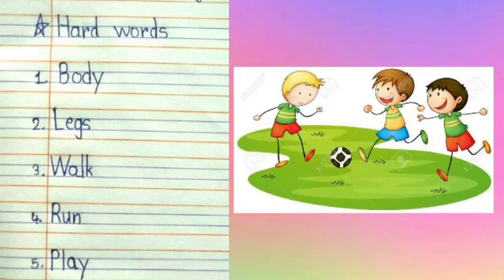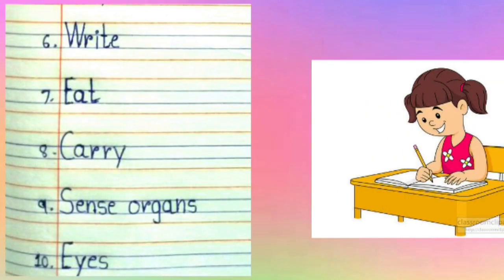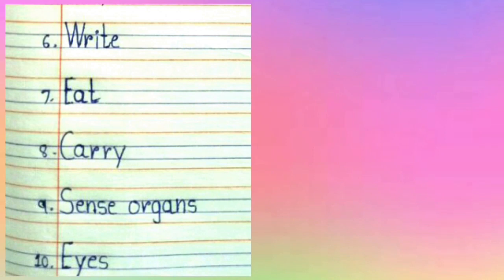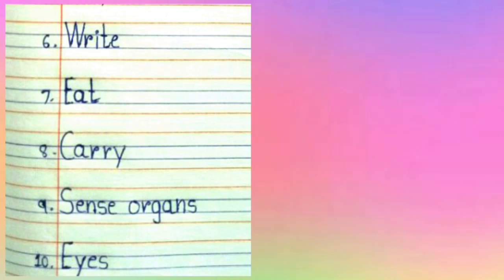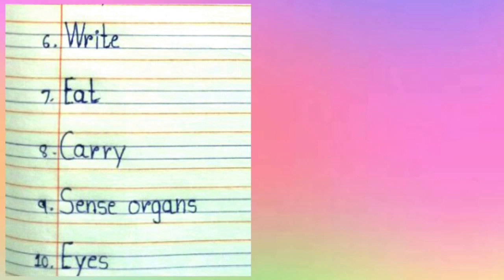Fifth number is play. P-L-A-Y. Play, yaani ki, khelna. Sixth number is write. W-R-I-T-E. Write, yaani ki, likhna. Seventh number is eat. E-A-T. Eat, yaani ki, khana. Eighth number is carry. C-A-R-R-Y. Carry, yaani ki, uthalana.